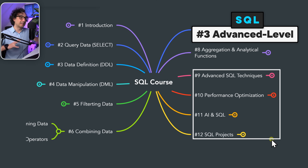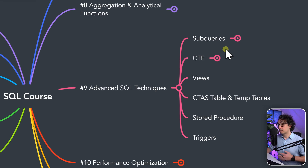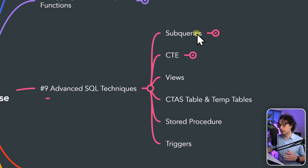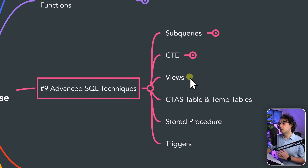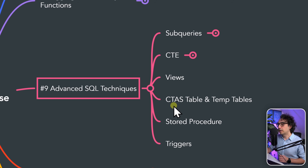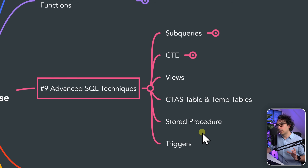By chapter eight, you've covered the intermediate level. The last four chapters cover advanced SQL. First is the subquery — a query inside another query — and the very popular CTE (Common Table Expression). Then you'll learn how to create views, create tables using SELECT, use temporary tables, write stored procedures, and work with triggers.